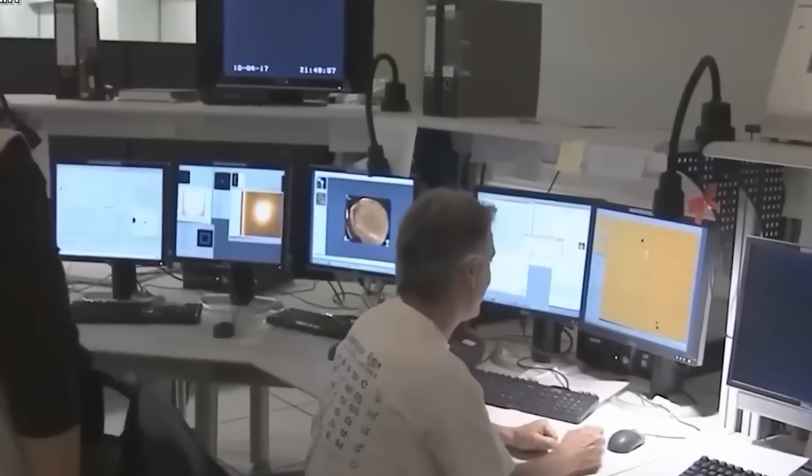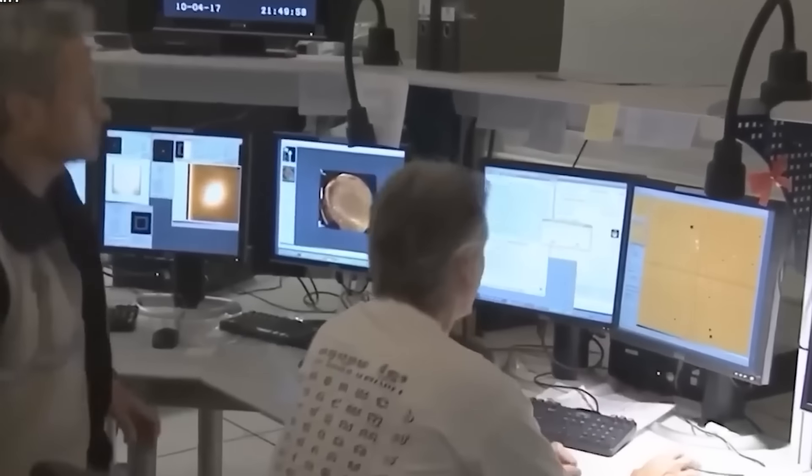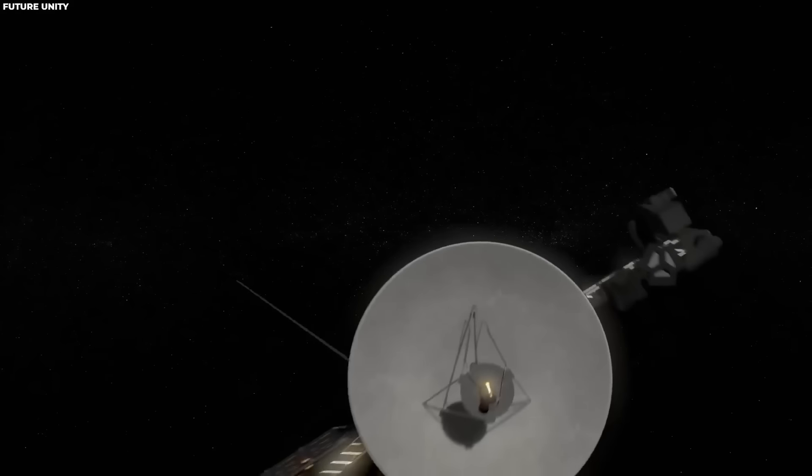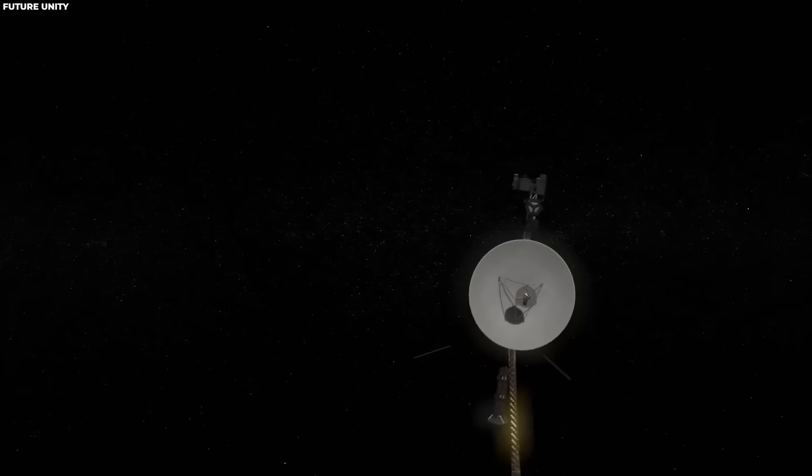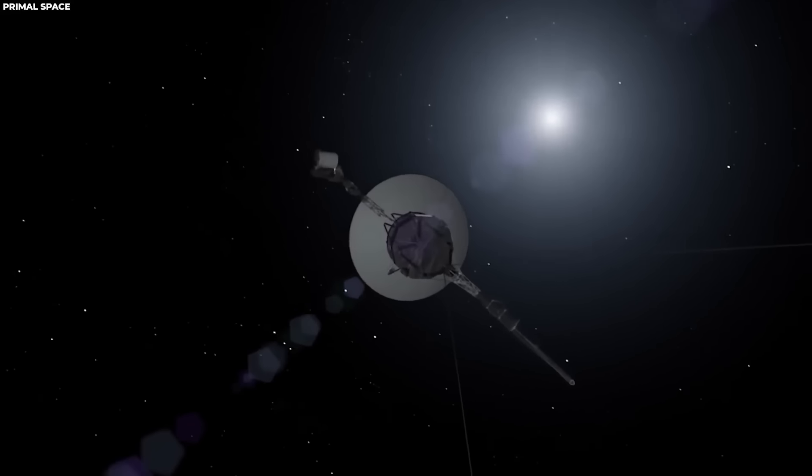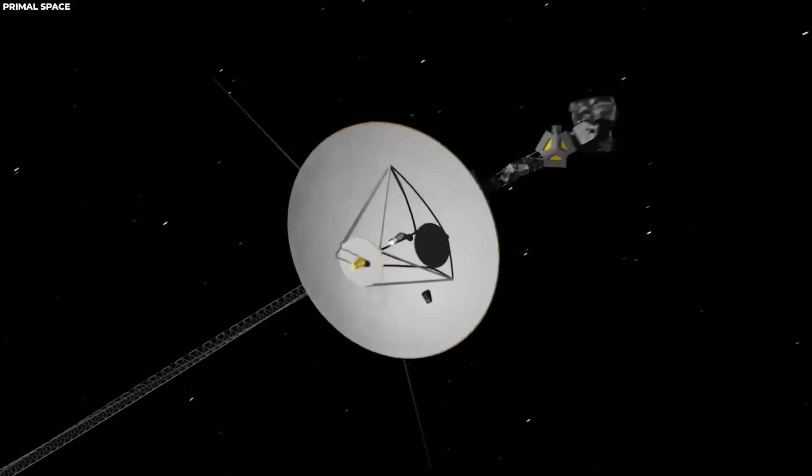Voyager 2, its twin, is still functioning well in interstellar space, 12.1 billion miles from Earth. In contrast, Neptune, the farthest planet from Earth, is at most 2.9 billion miles away. To get a good grasp of what the Voyagers have done, it is important to talk about their exploits and discoveries.